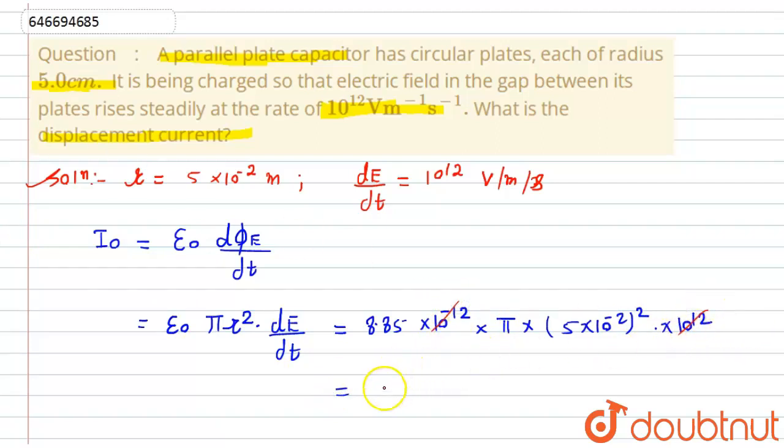Simply you can see that 10^-12 and 10^12 will be cancelled out. We get 8.85 multiplied by π having the value of 22/7, multiplied by 5×5 are 25, and 10^-2 squared becomes 10^-4. On simplifying, we get this value to be 0.07 ampere, and this is our required answer.